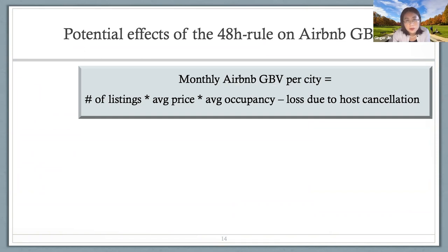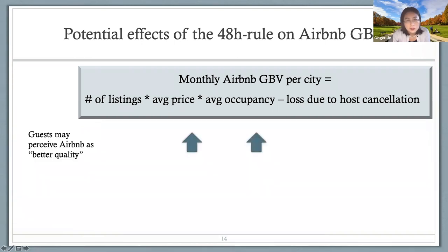For strict hosts managing very few properties, unlike hotels with many rooms that can juggle uncertainty, a cancellation creates gaps in the calendar that are hard to fill — if a two-day party cancels, the host must find a guest needing only those specific one or two days, which is harder when the property is popular and surrounding reservations are fixed. That's why strict hosts may face potentially higher operating costs after the 48-hour rule.